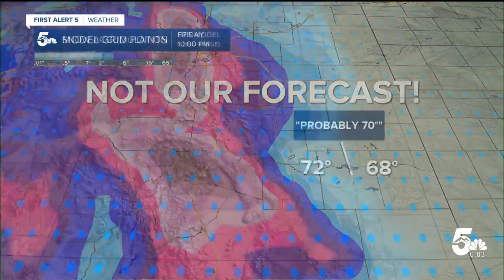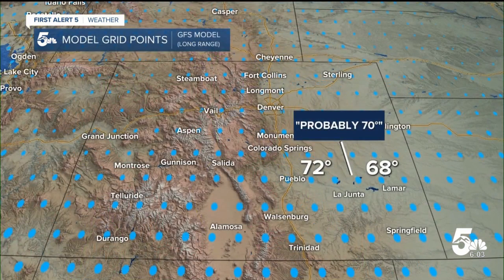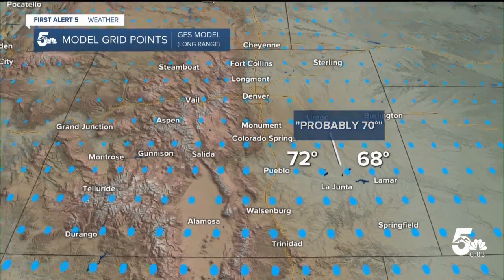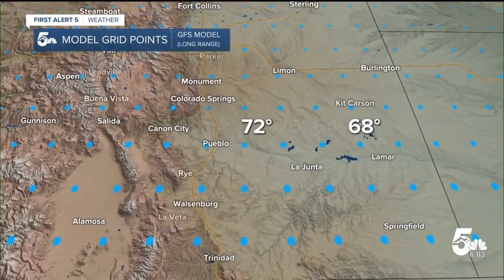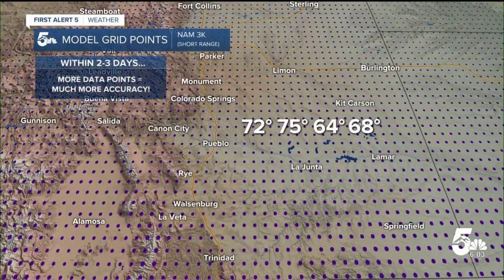When you look at an app on your phone, it's reading the exact output of a weather model or blend of them. Alex, Alan, and I use our knowledge of weather science and the specific strengths and weaknesses of models in our region to make forecasts like the one tonight. No one gets it right all the time, but we will never show you a single model run and tell you that's what's going to happen.